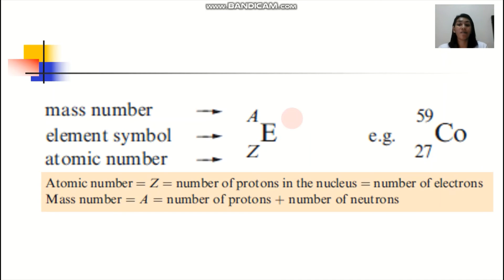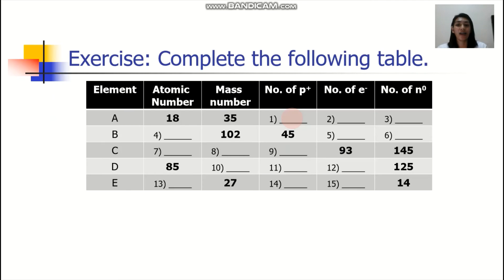Sabi natin, atomic number would represent now the number of protons and the number of electrons. If the atomic number is 18, the number of protons is also 18. The number of electrons is 18. Now, the number of neutrons, we're simply going to subtract now from the mass number. So, 35 minus 18 would be 17. So, the number of neutrons would be 17.